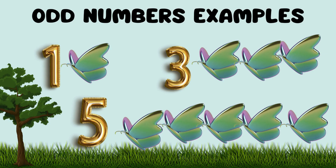Look at this picture. You can more easily understand about odd numbers. We have one butterfly, three butterflies, and five butterflies. This is all about odd numbers.